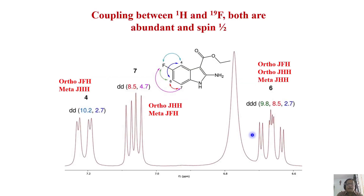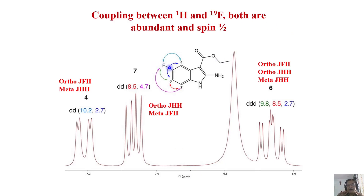Now let us understand how to observe coupling between different abundant heteronuclear spins. Take a molecule with one fluorine substituent on a ring. You can get coupling between proton and fluorine — both are spin-half and both are nearly 100% abundant. If fluorine is substituted in this molecule, you can easily observe coupling of this fluorine to ring protons and coupling of this fluorine to carbon. In the carbon NMR, all couplings can be visible. The coupling strength of fluorine to proton can be two bonds or three bonds.